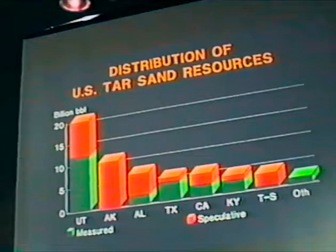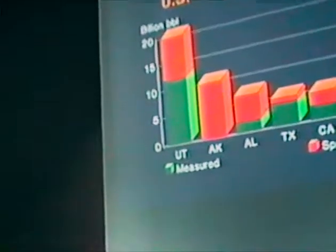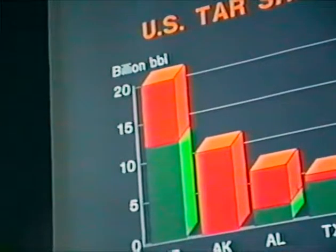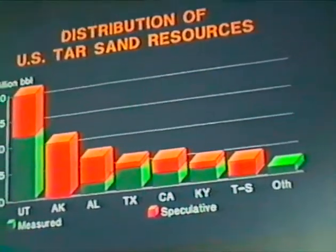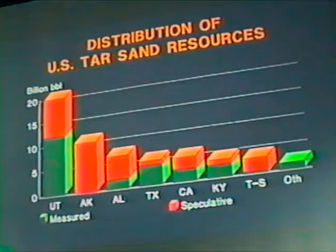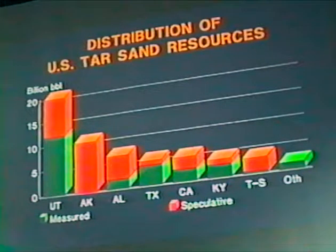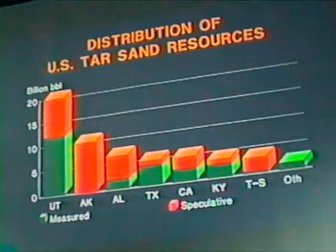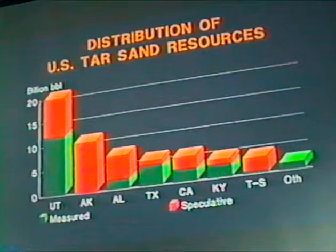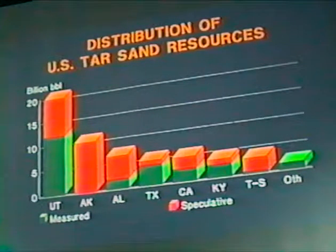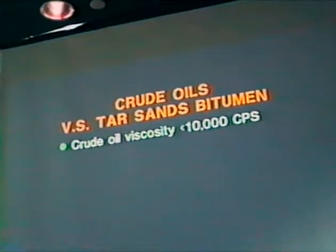Tar sands are very plentiful in the United States. According to a Lewin and Associates report from about two years ago, Utah has by far the largest amount. Alaska's reserves are speculated due to the large amount of crude oil there. Alabama's measured reserves are better than previously thought. Texas, California, and Kentucky have quite a bit of tar sands and heavy oils, with other sources in Kansas, Missouri, Oklahoma, Wyoming, and New Mexico. In total, Edmondson and Logan counties in western Kentucky have approximately 3 billion barrels in place — about 2 billion in Edmondson county and about 1 billion in Logan county.